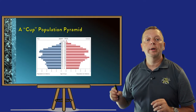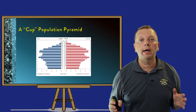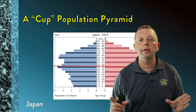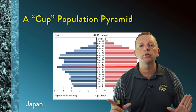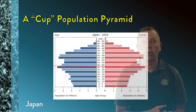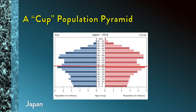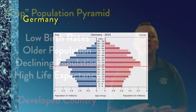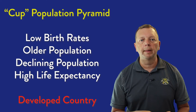We also have a population pyramid called the cup. Japan and Germany are examples of cup-type population pyramids. Here the majority of the population is older than 45, so since there are more people over 45, fewer people are having babies, and you're actually going to have a shrinking population. This too happens in a developed or rich country.